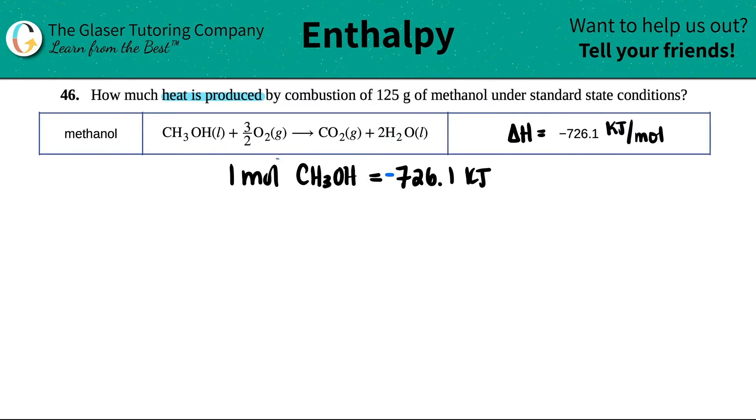Because from there I can use this conversion factor since I know one mole of methanol will release 726.1 kilojoules. So how do I go from grams to moles? We know that. 125 grams of methanol CH3OH times by a ratio. Throw the unit you don't want on the bottom: grams of CH3OH.